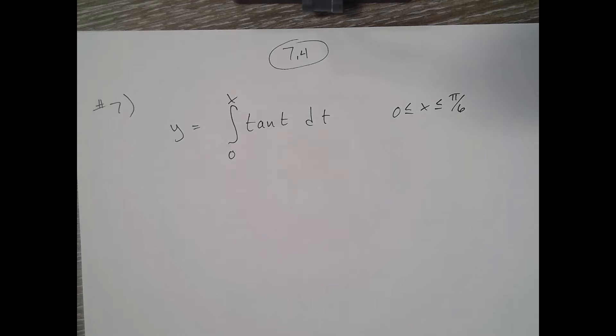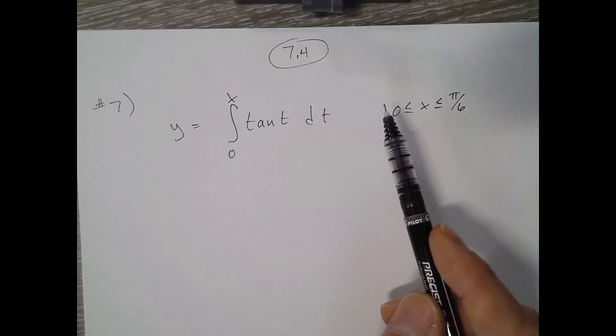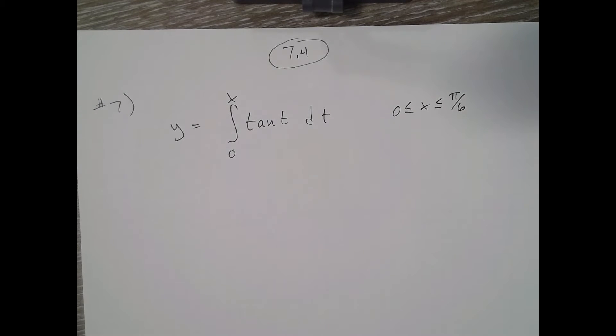Problem 7.4 number 7. There are three parts to it. Part A: set up an integral to find the length of the curve. Part B: graph the curve to see what it looks like. I'm not going to show you that, so we're just going to set up an integral. Part C says use the calculator to find the length of the curve.